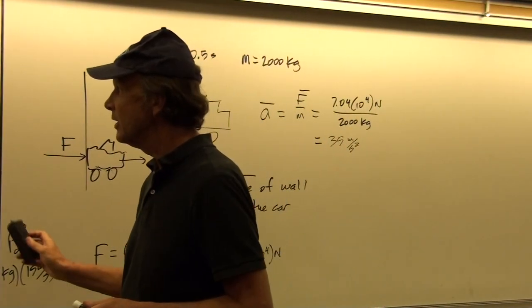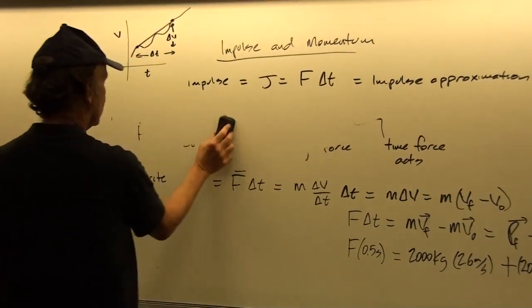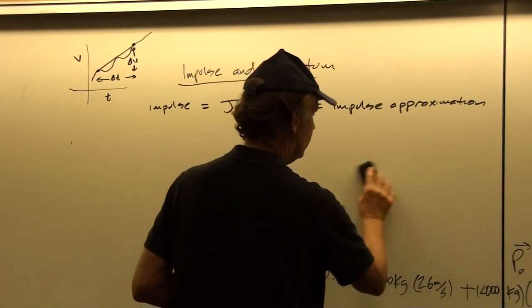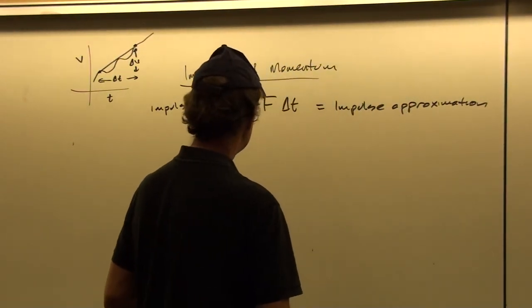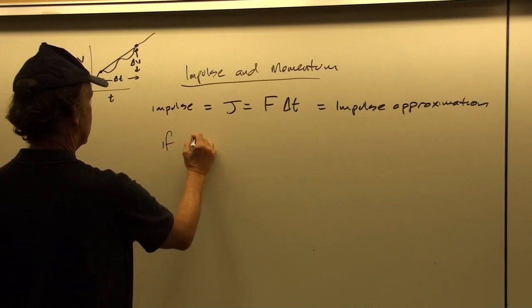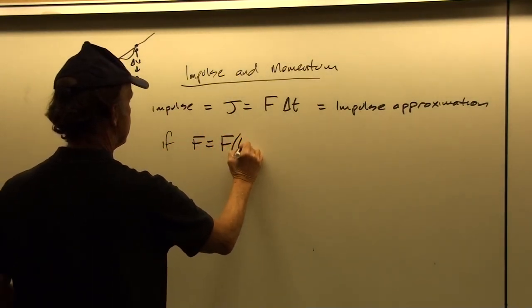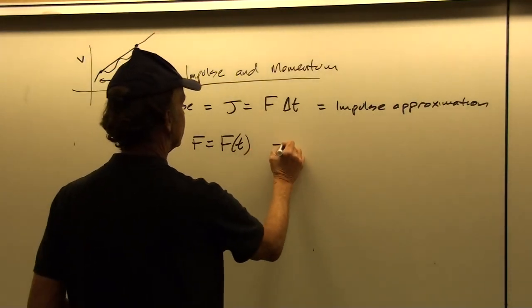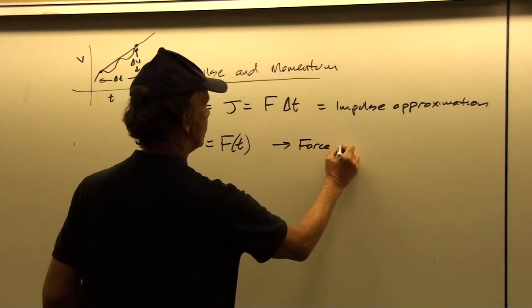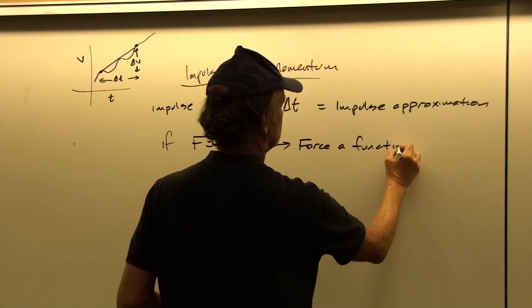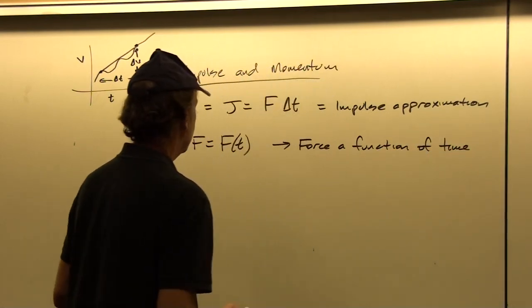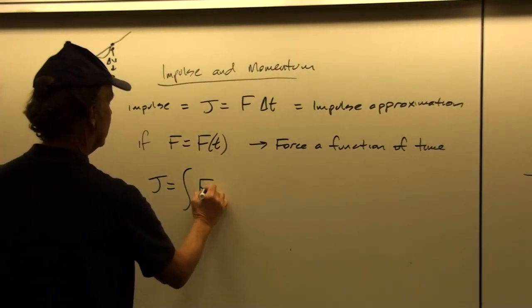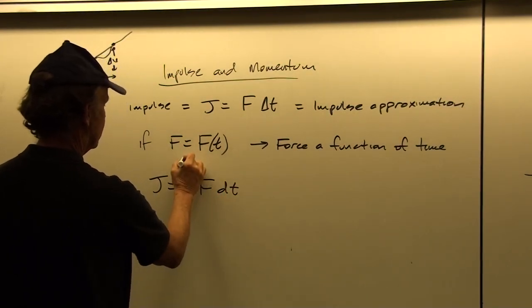This is how we work with impulse as change in momentum for a problem where we're interested in the average force. But what if we had a force that changes as a function of t? That means it's not force times time — just that the force is a function of time. If that is the case, then J equals the integral of F times dt from t_initial to t_final.